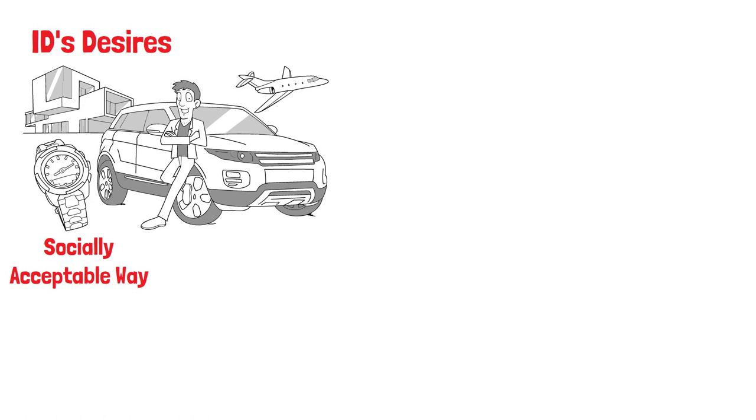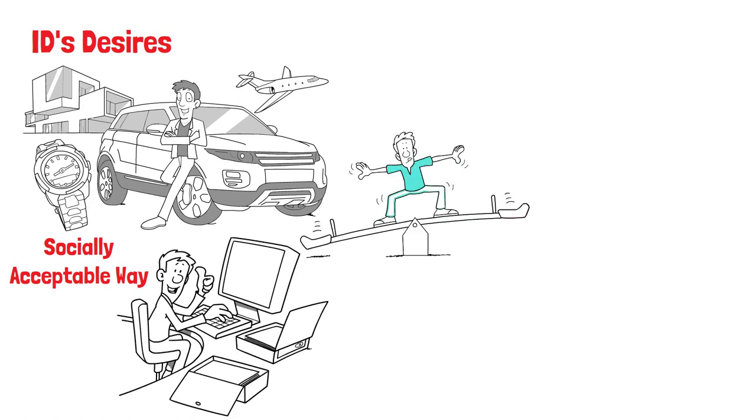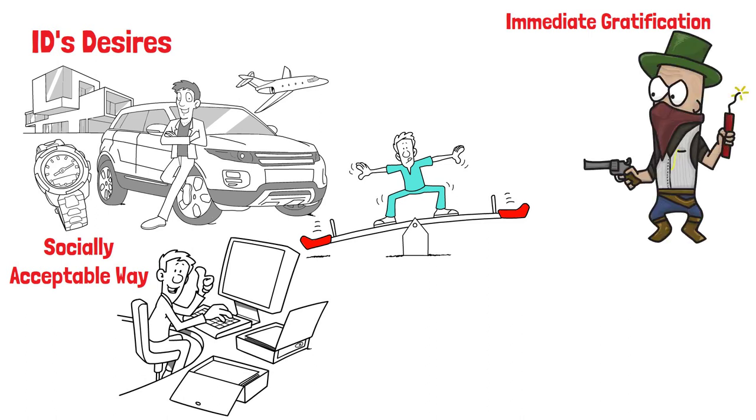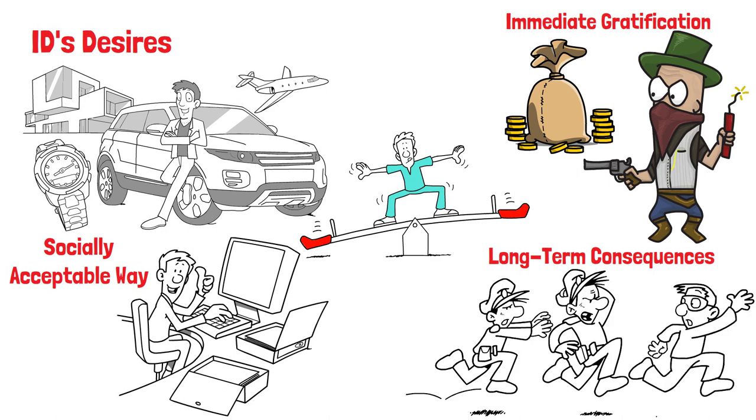The ego operates on the reality principle, striving to satisfy the id's desires in a way that's realistic and socially acceptable. It considers the consequences of actions and strives to achieve a balance between the immediate gratification sought by the id and the long-term consequences recognized by the superego.